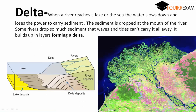So what is a Delta and how is it formed? When a river carrying sediments reaches the sea, its speed slows down and the sediment it is carrying gets deposited at the joining point of the sea and the river. This layer by layer formation converts into a Delta.